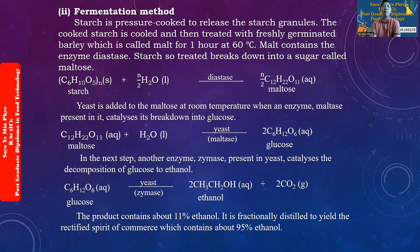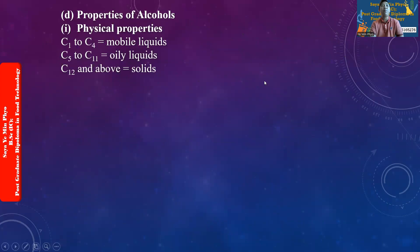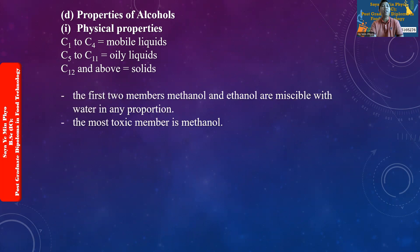After rectification, the product contains about 95% ethanol. The initial fermentation product contains about 11% ethanol.